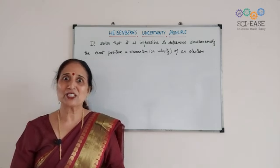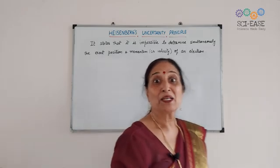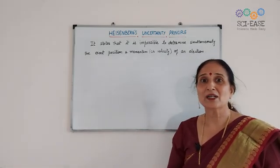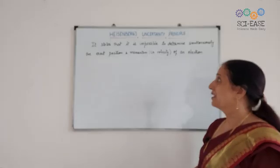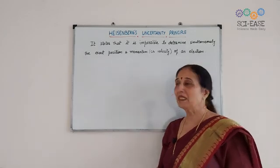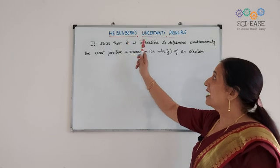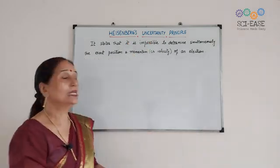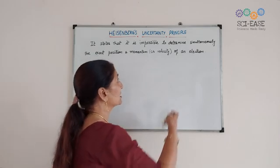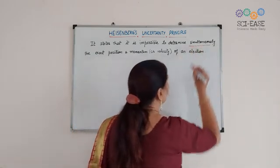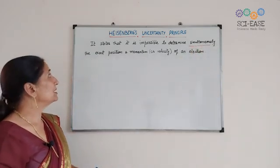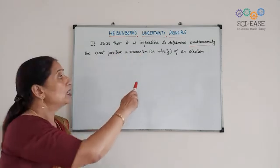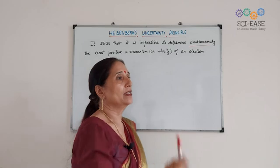Schrodinger was surprised by this answer, but to some extent Heisenberg was right. So, what Heisenberg's Principle states is that it is impossible to determine simultaneously the exact position and momentum or velocity of an electron. The word 'simultaneously' is very important.